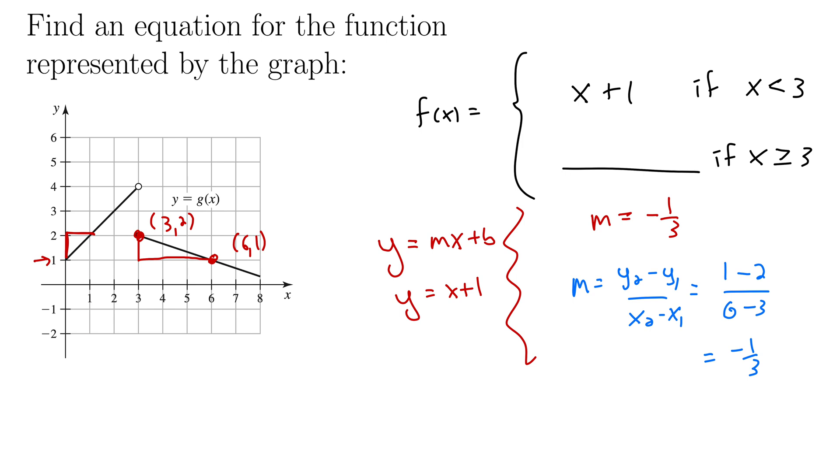Now we need our y intercept. One thing you could do is try to trace this back. It looks like it's going to be 3, but how do we know for sure? It's pretty risky to just trace it back like that. So instead I'm going to use the point slope equation for a line.